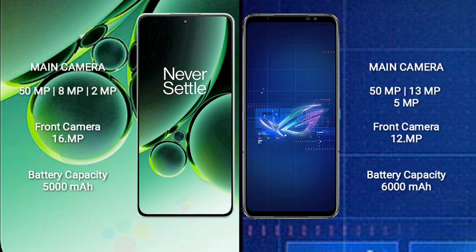OnePlus Nord 3 features a rear triple camera setup of 50MP plus 8MP plus 2MP, and a front camera of 16MP. Asus ROG Phone 6 features a rear triple camera setup of 50MP plus 13MP plus 5MP, and a front camera of 12MP.